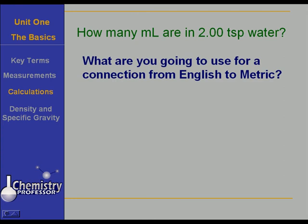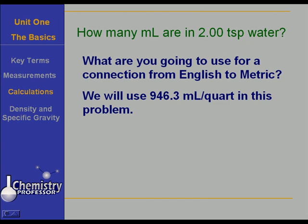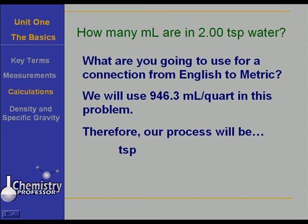What are you going to use for a connection from English to metric? Well, I'm going to use 946.3 milliliters per quart in this problem. That's the only connection I've memorized from English to metric for volume. It just works so well to get there from most any place that I start. So the process then that I'm going to use is this: I'm going to start with teaspoons, go over to quarts, convert quarts to milliliters, and I will be at my destination.